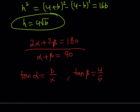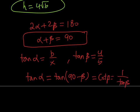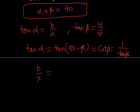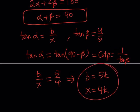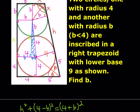Since α + β = 90°, they are complementary angles, which means tan(α) = tan(90° − β) = cot(β) = 1/tan(β). So the tangents are reciprocals. We can write b/x = 5/4, meaning b and x are proportional. Suppose b = 5k, then x = 4k. This is our key to the kingdom.